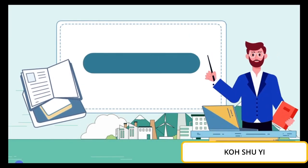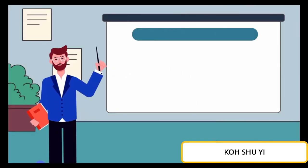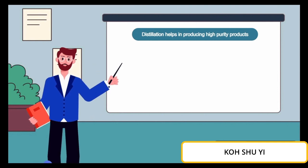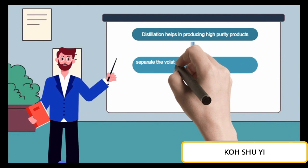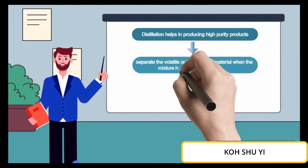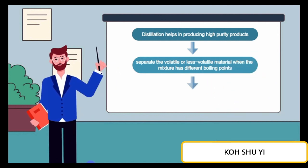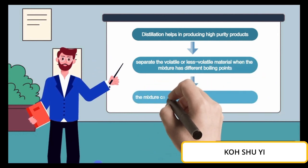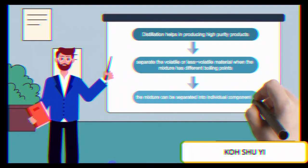Moving on, let's look into the advantages of distillation. Firstly, distillation helps in producing high purity products. For instance, distillation can separate the more volatile or less volatile material when the mixture has different boiling points. Hence, the mixture can be separated into individual components, increasing the purity of the products.